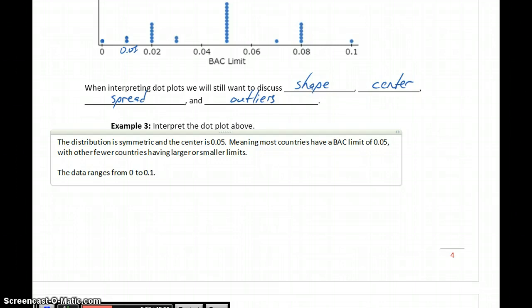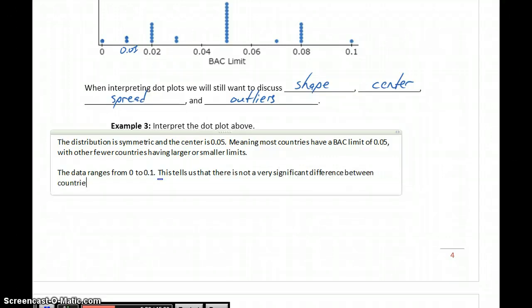So it's still up to a little bit of a debate. Is 0.1, from 0 to 0.1, is that a really large range or is that not a very big range? Someone with a little more understanding in this area might have more information to share on that, but I'm going to say this tells us that there is not a very large range, there is not a very significant difference between countries at the low end and high end of these limits.